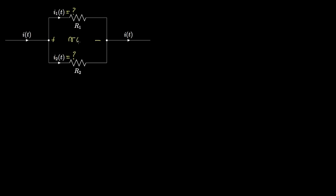Second, I'd like to know if I could replace the two resistors with a single resistor and still retain the same voltage between the two nodes. So if the voltage from this node to this node is V(t), I'd like to know if I could put a single resistor between those two nodes with some resistance R, so that if I have the same current I(t) flowing through that resistor, I'd have the same voltage V(t) across it.